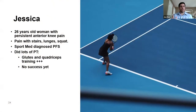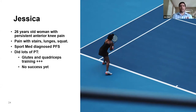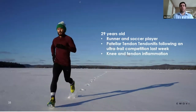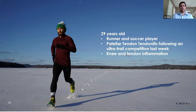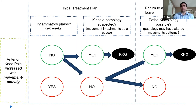We'll present two cases. First, Jessica, a 26-year-old woman with persistent anterior knee pain — pain during stairs, lunges, and squats, typical of patellofemoral pain syndrome. She's been diagnosed by a sports med physician and has done a lot of PT including glute and quadricep strengthening, but still has residual knee pain. Our other patient is a 29-year-old runner and soccer player with patellar tendon tendinitis that developed after an ultra trail competition — the knee is still swollen and tender with significant inflammation.